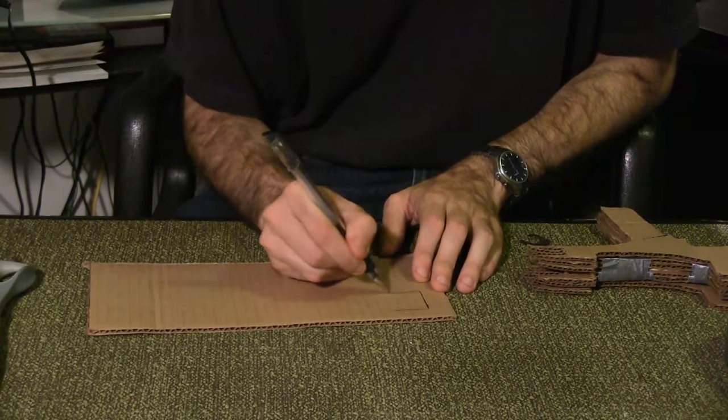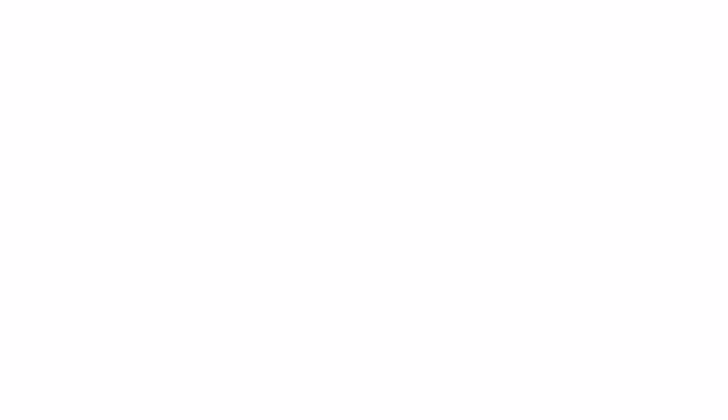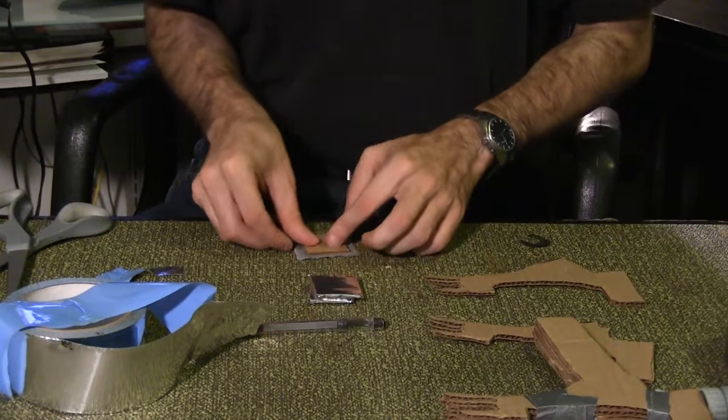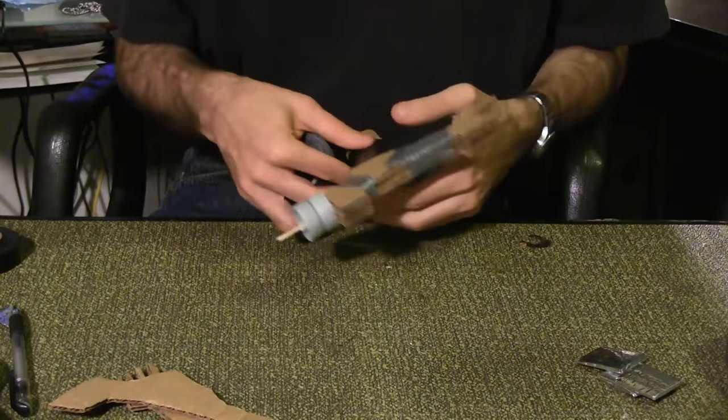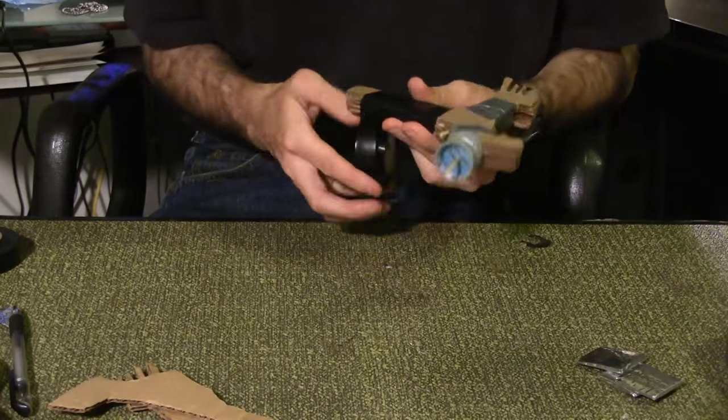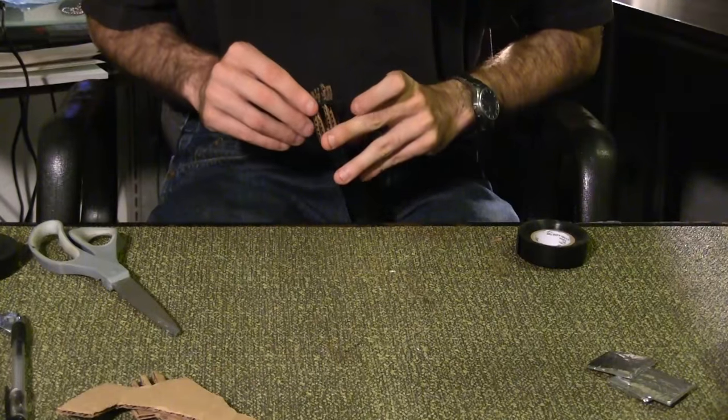Draw three squares, each one inch by one inch, and cut them out. Wrap all three in aluminum tape. Wrap the phaser in electrical tape. Be sure to wrap the slits at the back individually.